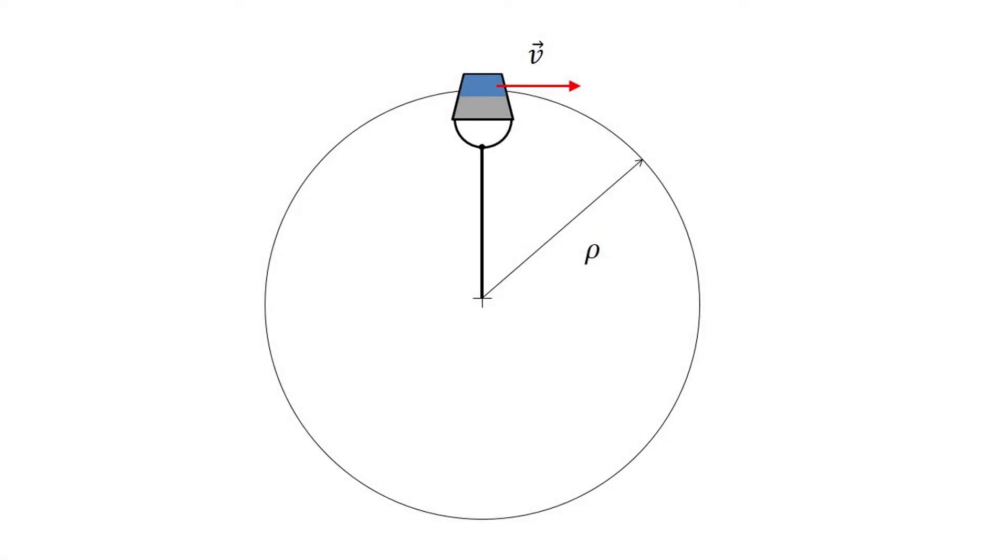Therefore we will analyze the bucket when it is completely upside down, at the top point on the circle. At this point, the velocity should be completely horizontal.